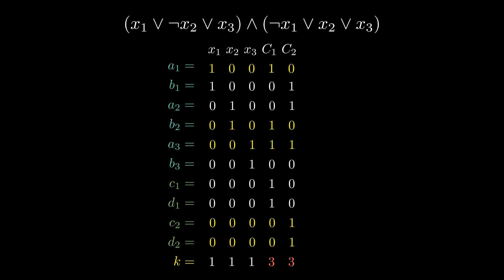For the other direction, suppose a subset of integers sums to exactly k. Since the digits of k that correspond to the variables are equal to 1, exactly 1 of a_i and b_i is included in the subset for each i. Hence, this subset corresponds to a valid assignment of values to the variables. And since the digits of the integers corresponding to each clause sum to 3, there must be at least 1 literal in each clause that is true. This proves that the subset sum problem is NP-complete.